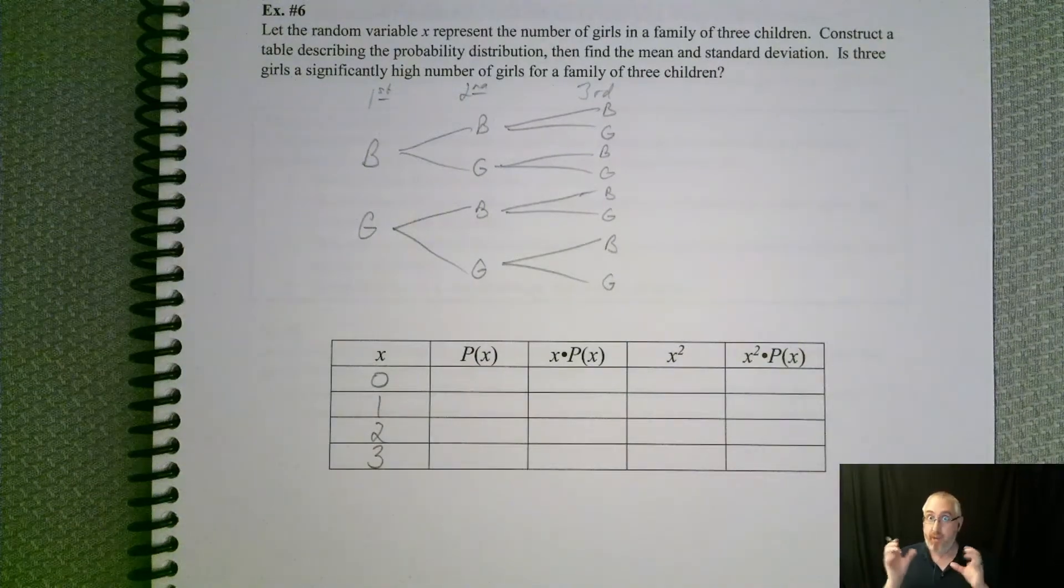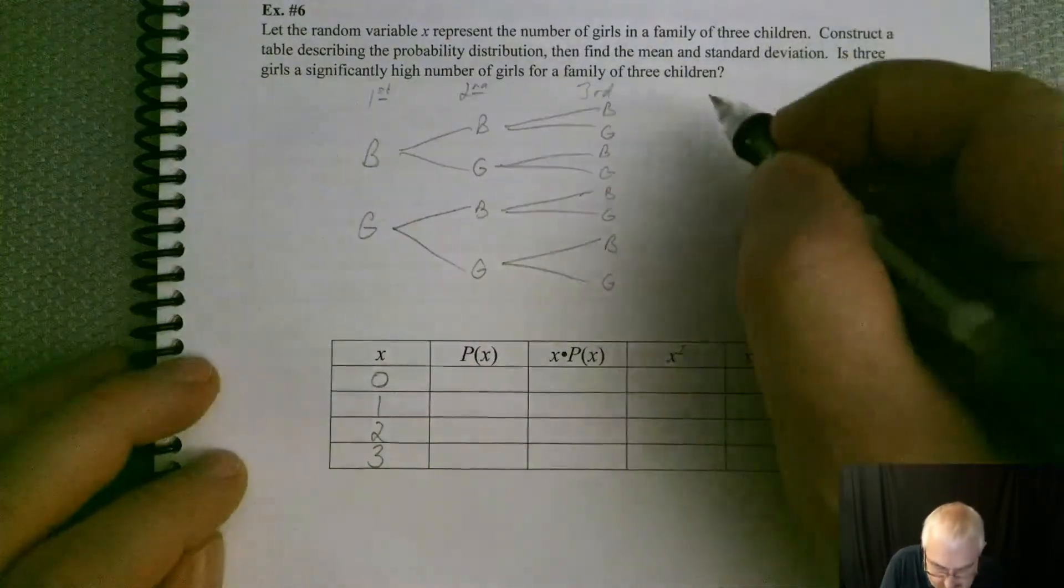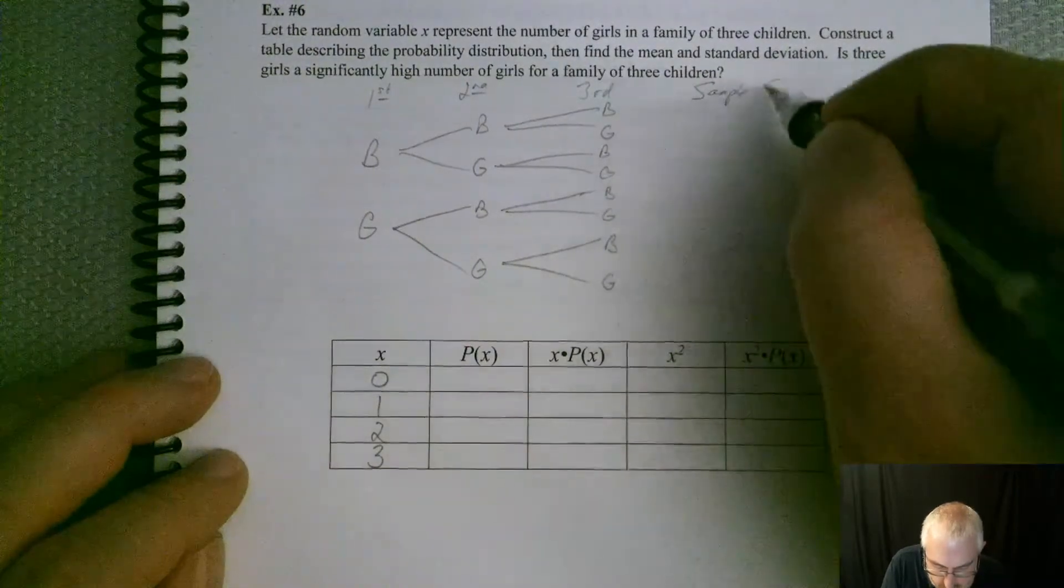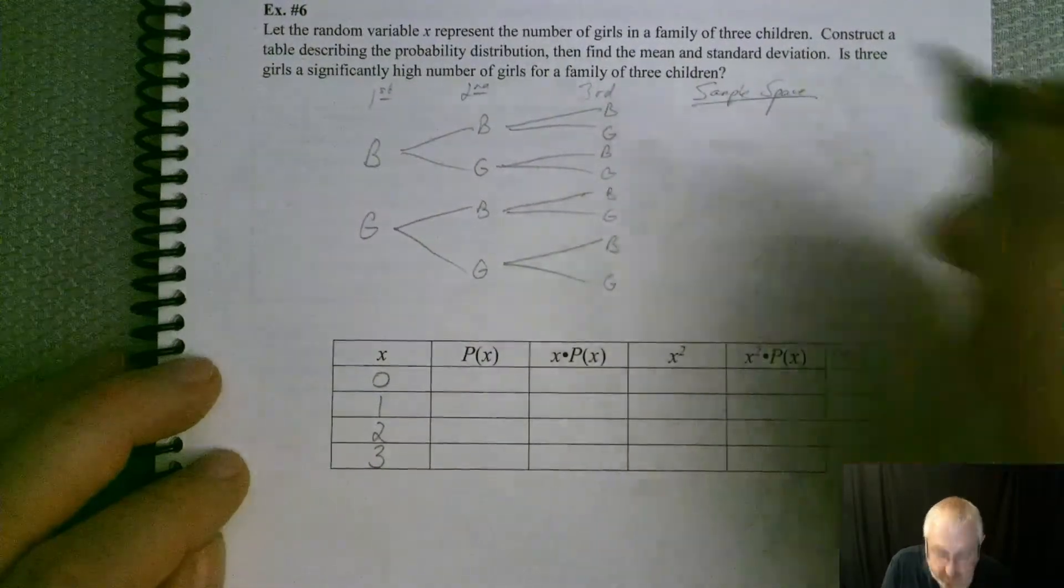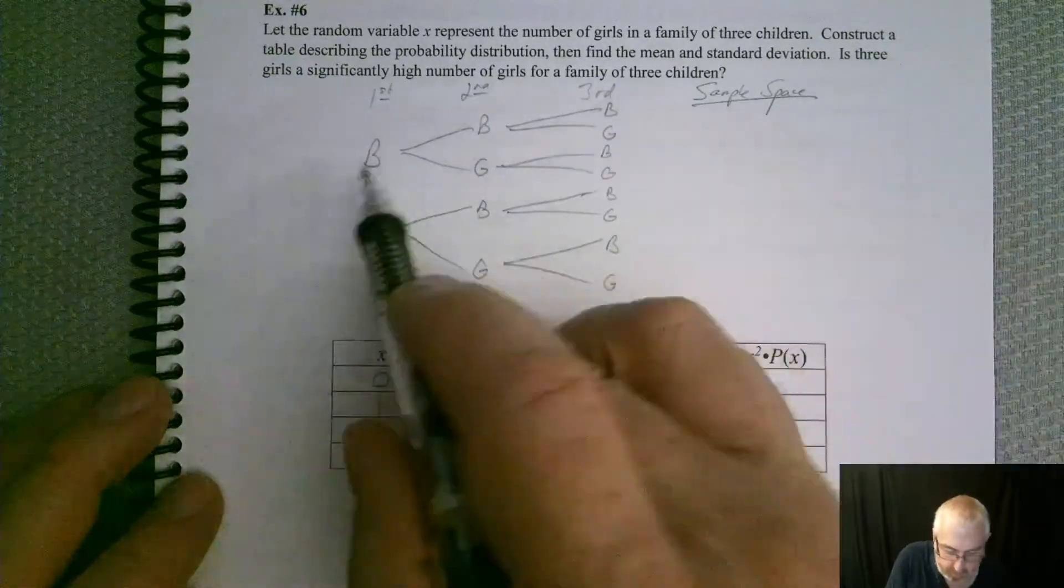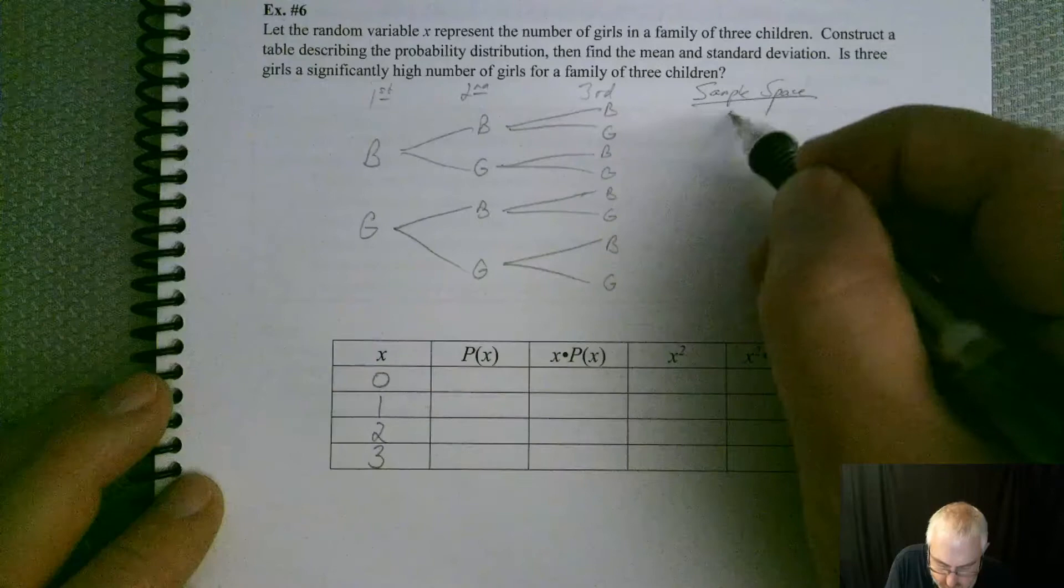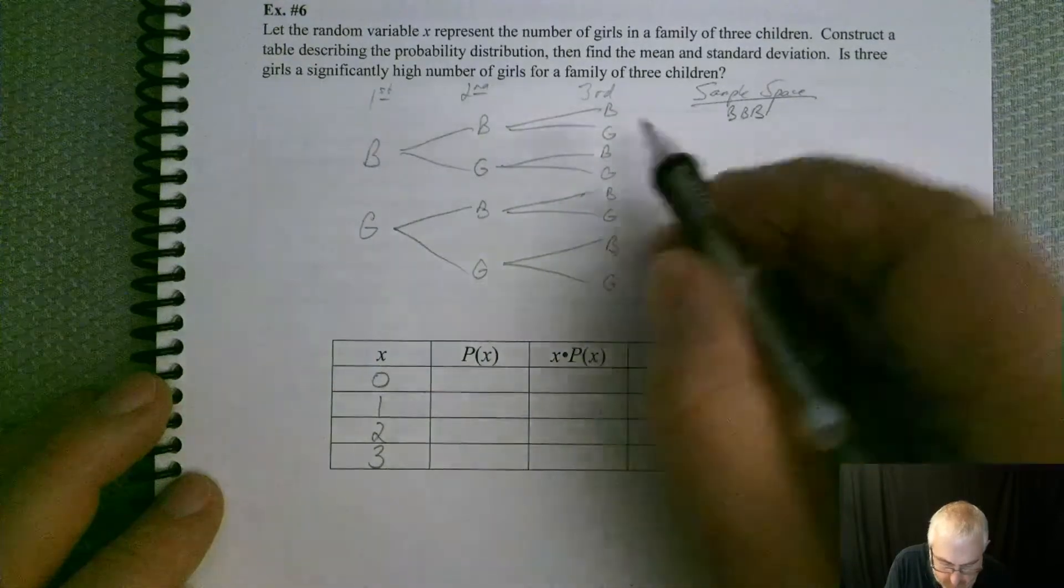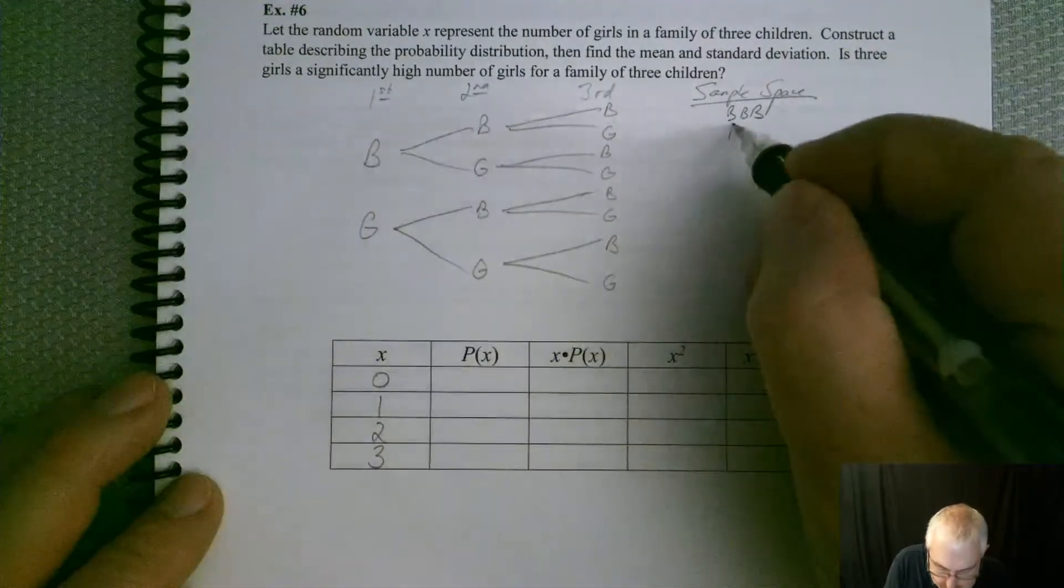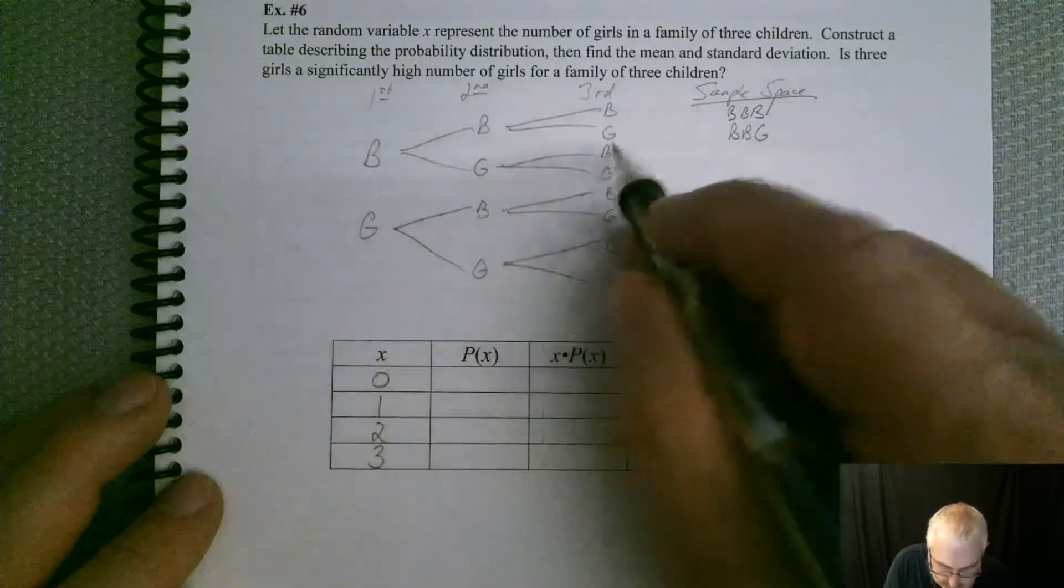But now we've got to make sure we get our sample space correct. In our sample space, we've got to go down every branch. So one boy, two boys, three boys. Boy, boy, girl. Boy, girl, boy.